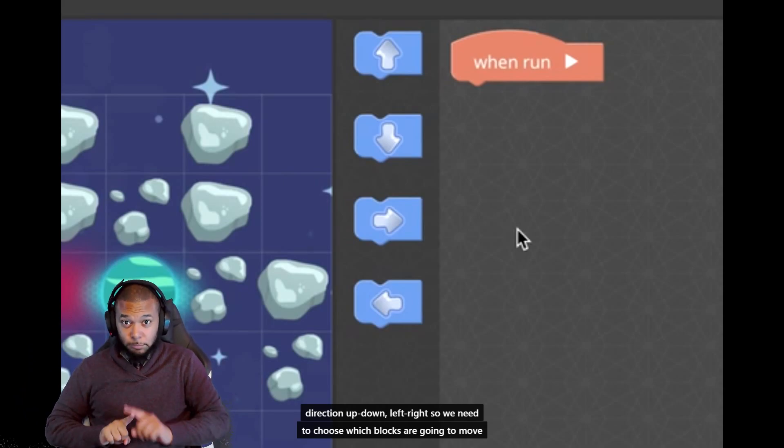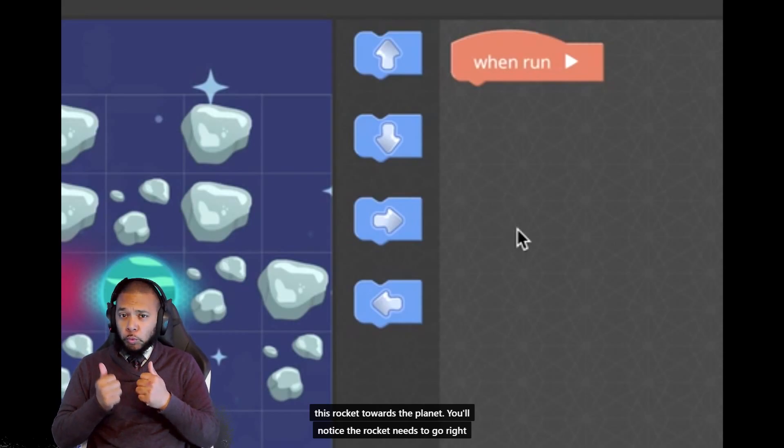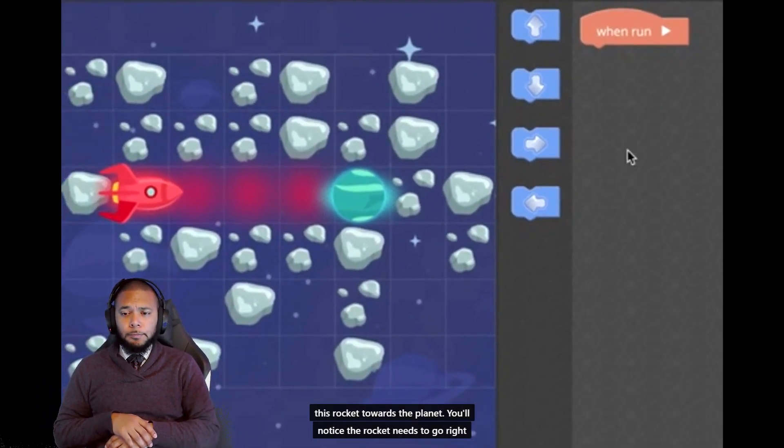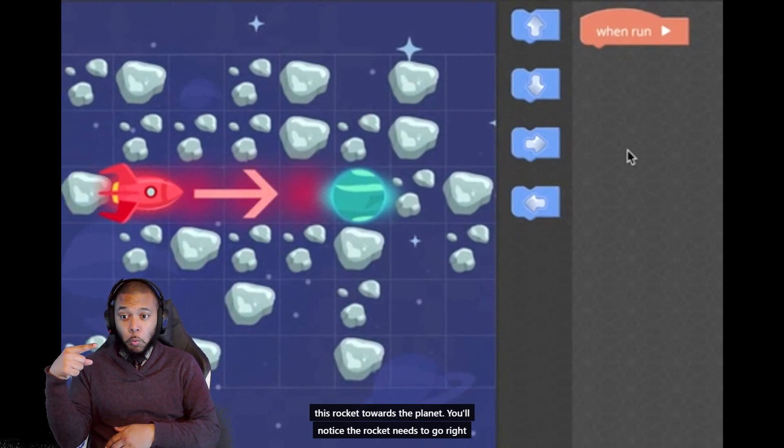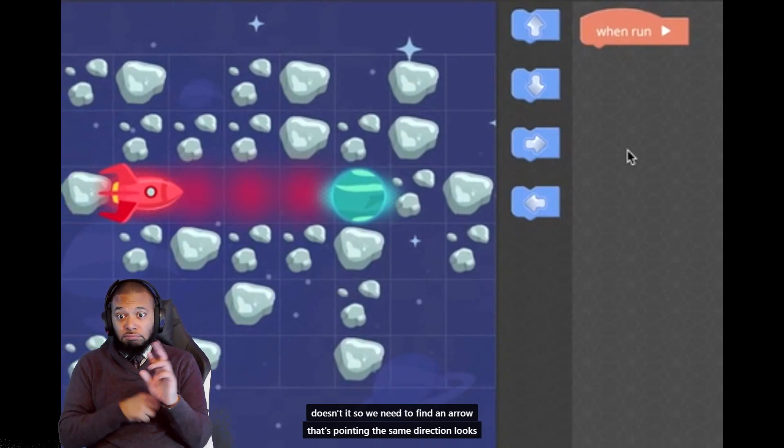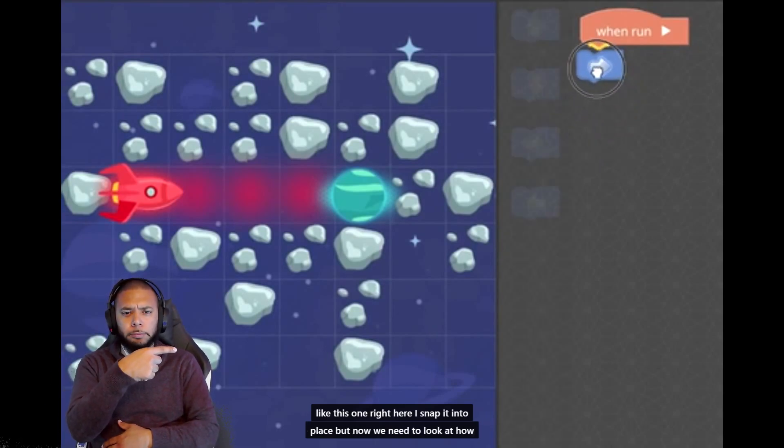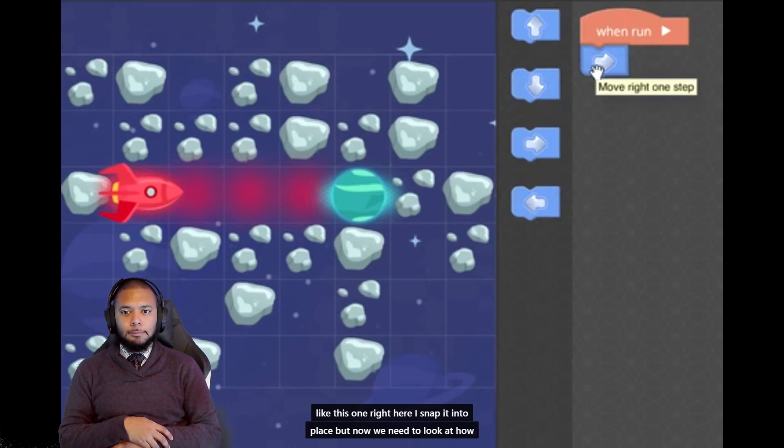We need to choose which blocks are going to move this rocket towards the planet. The rocket needs to go right, doesn't it? So we need to find an arrow that's pointing the same direction. Looks like this one right here. I'll snap it into place. But now we need to look at how many times it needs to move.